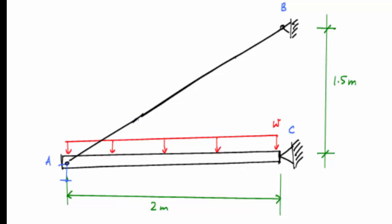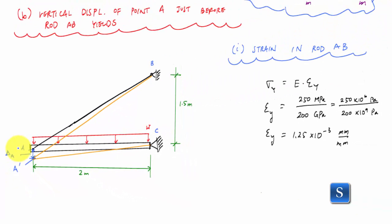And the new location of A, we'll call this right here A prime. And my deformed shape will look like this. And that yellow line represents essentially the deformed shape. And what we're really trying to find is this vertical displacement right here, this displacement which I will call delta A.